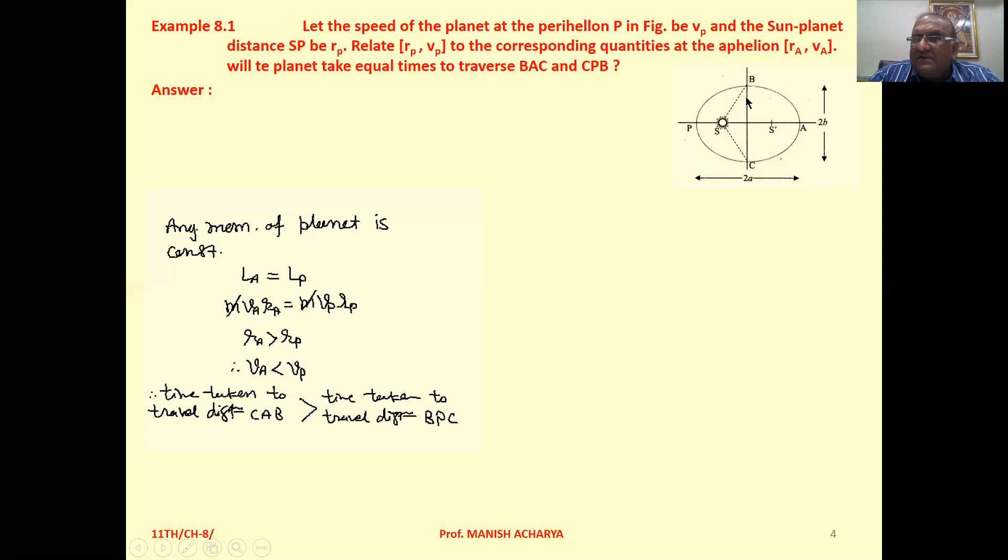Both the paths are equal but velocities on both paths are different, so definitely the time will be different. Time taken to travel distance CAB will be greater than the time taken to travel distance BPC, because in region BPC the speed is more so time taken is less, and in CAB region speed is less so time taken is more.